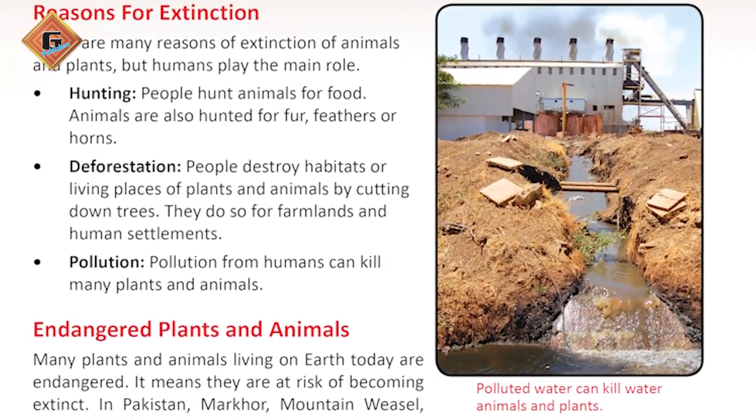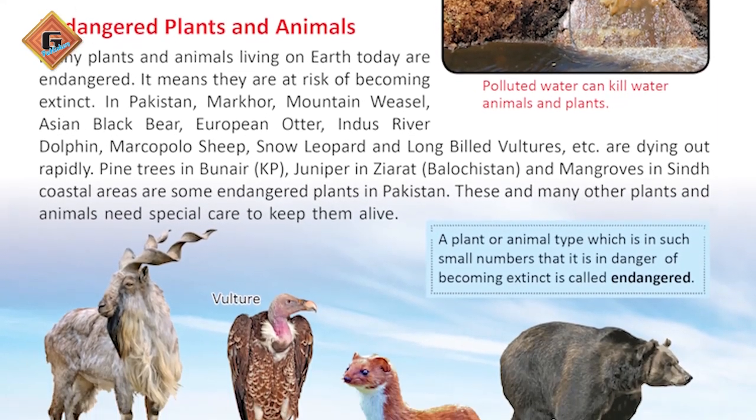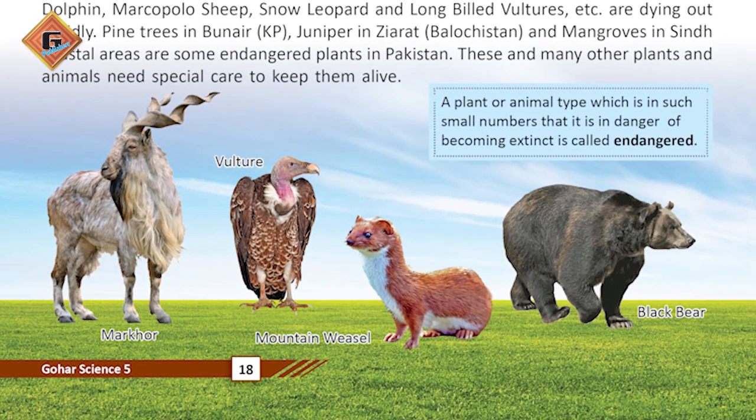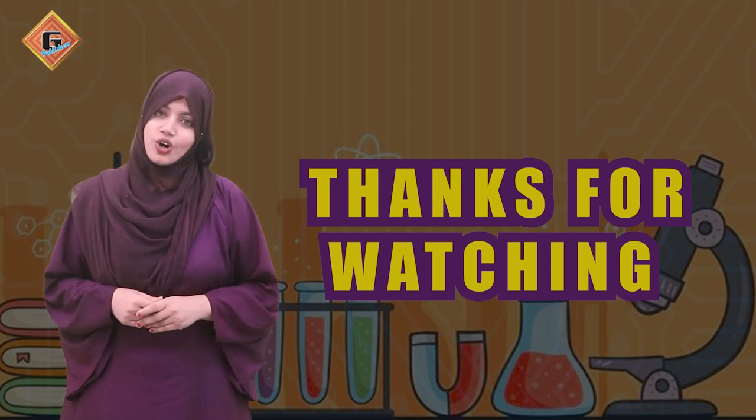Woh tamam human acts jis ki wajah se hamari diversity disturb ho rahi hai aur hamari species in danger ho rahi hain — aap is concept ko lekar chalein endangered species ki taraf. Aap students ko batayein ki woh species jo khatam hone wali hai ya jis ki paydawar khatam hone wali hai usko hum endangered species kehte hain. Is tarah se aap students ke andar biodiversity aur endangered species ke baare mein interest develop karein. Students understand kar jayenge ki classification kis tarah se ki gayi hai aur ab they are able to do their assessments as well. I hope this video will be fruitful for all of you. Thank you for watching. Allah Hafiz.